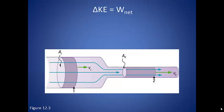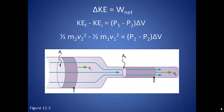Now remember that if we have a network being done, then we also have a change in our kinetic energy. So final kinetic energy, which will be describing fluid 2 minus the kinetic energy of fluid 1, is equal to the network done by the fluid. In turn, we can substitute in the expression for kinetic energy.